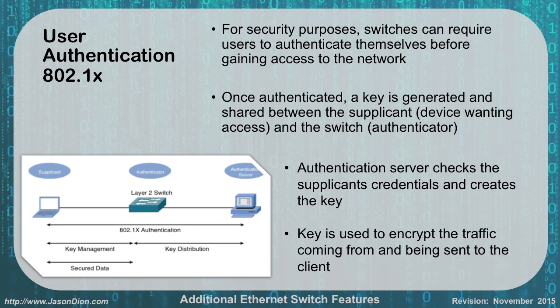The authentication server is used to check the supplicant's credentials and create the key. This key is then used to encrypt traffic coming to and from that device. This allows us to have a wired network with encryption between the device and the switch to ensure communications aren't snooped on by other people, giving you additional layers of security.